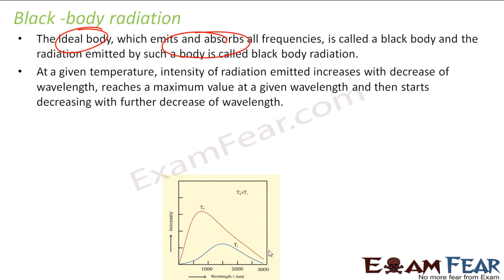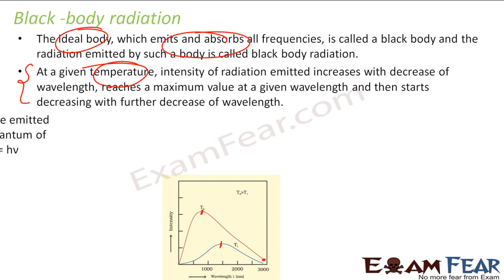This is the maximum value. For example, you start from here — the temperature is constant. You keep decreasing your wavelength. You will find that your intensity will reach a maximum value, and then go back down. Same thing: you start from here, you keep decreasing the wavelength, the intensity will go to a maximum and again go down. So, based on temperature, the intensity is changing. Temperature, wavelength, and intensity are all linked.